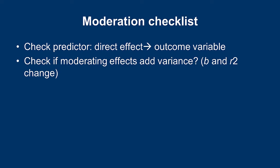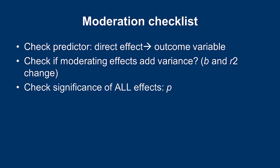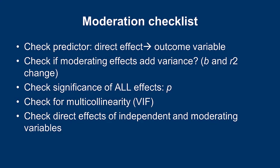You would also look at the significance of your interaction term — it should be statistically significant. Additionally, check your model for multicollinearity, because high multicollinearity may suggest some other underlying reason for the significant relationship. I would also recommend checking all the effects of the independent and moderating variables to determine whether we have a clean or a dirty moderating effect.